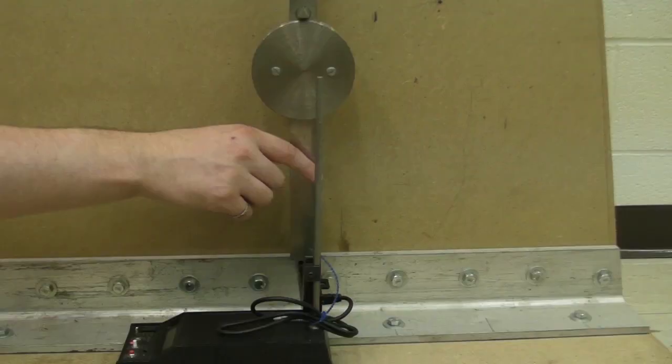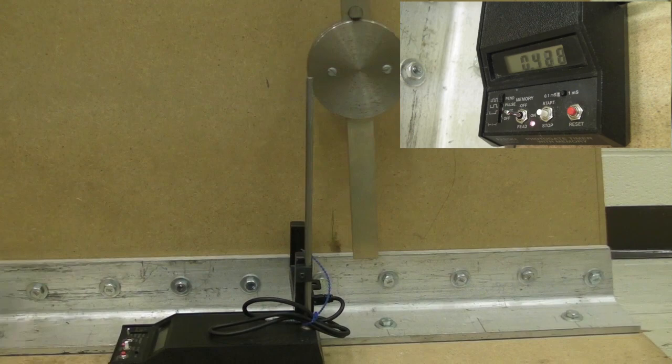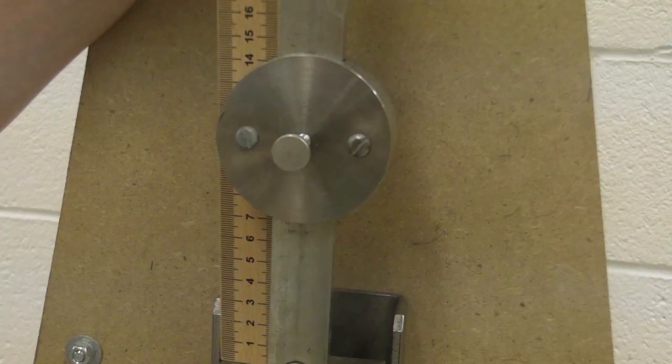Ensure the timer is in pendulum mode. You can measure the period of the pendulum by pressing the reset button on the timer and allowing it to swing through one period.